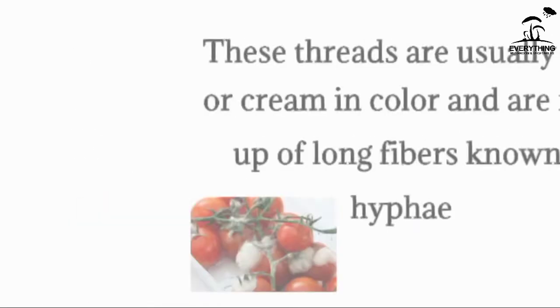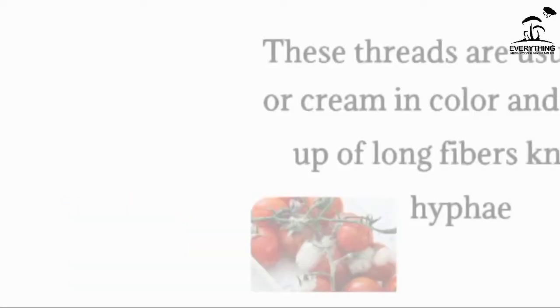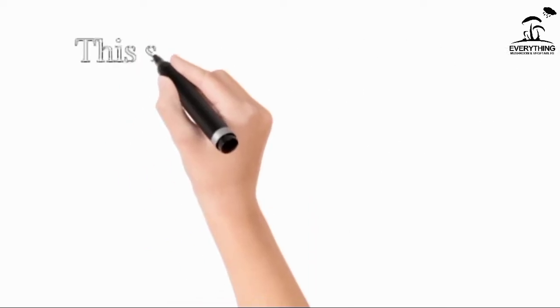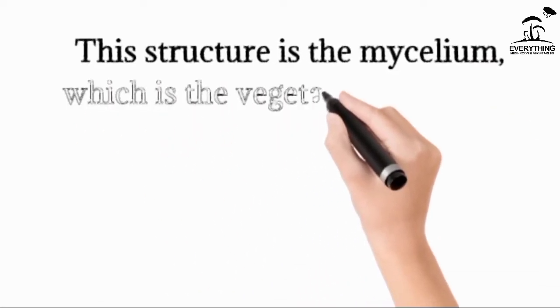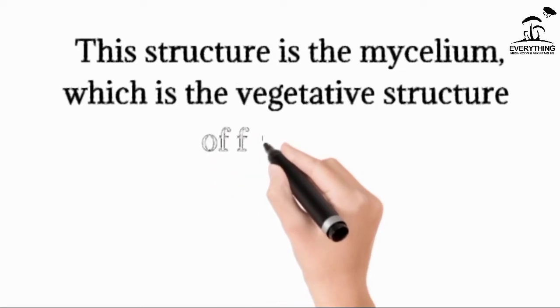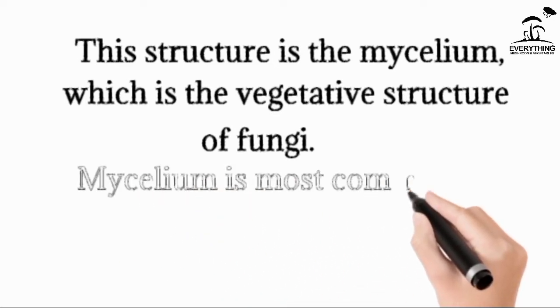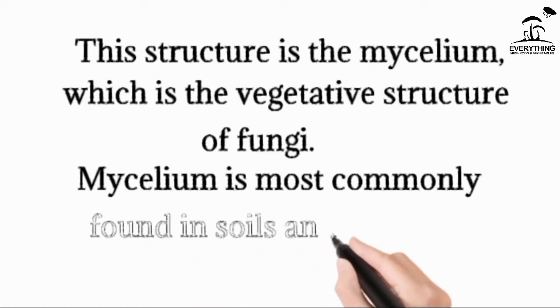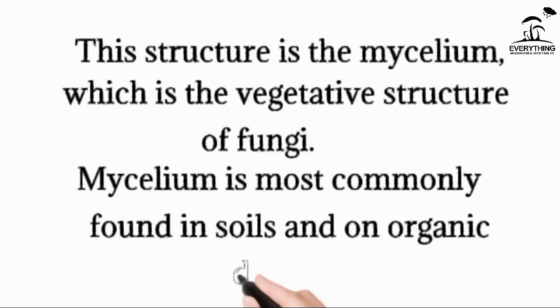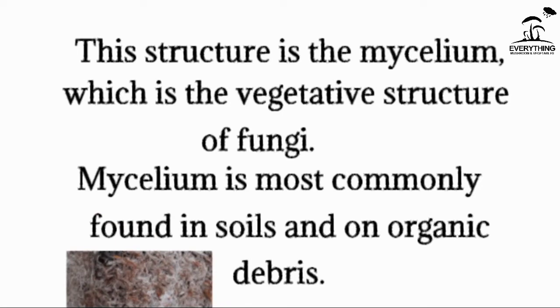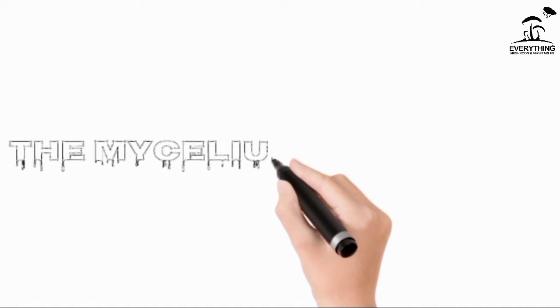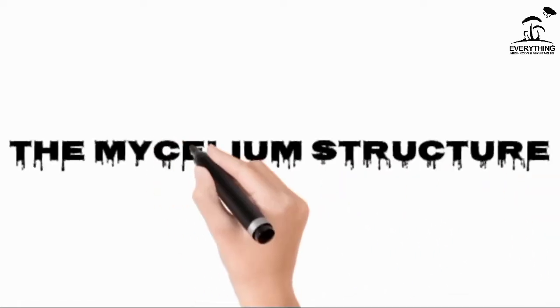These threads are usually white or creamy in color and they are made up of long fibers known as hyphae. This structure is the mycelium, which is the vegetative part of the fungi. Mushroom is a fungi and the vegetative structure of it is called the mycelium. Mycelium is mostly found in soil or dead organic matter, that is why mushrooms are grown on decomposed organic matter such as rice straw, wheat straw, hardwood, or softwood.